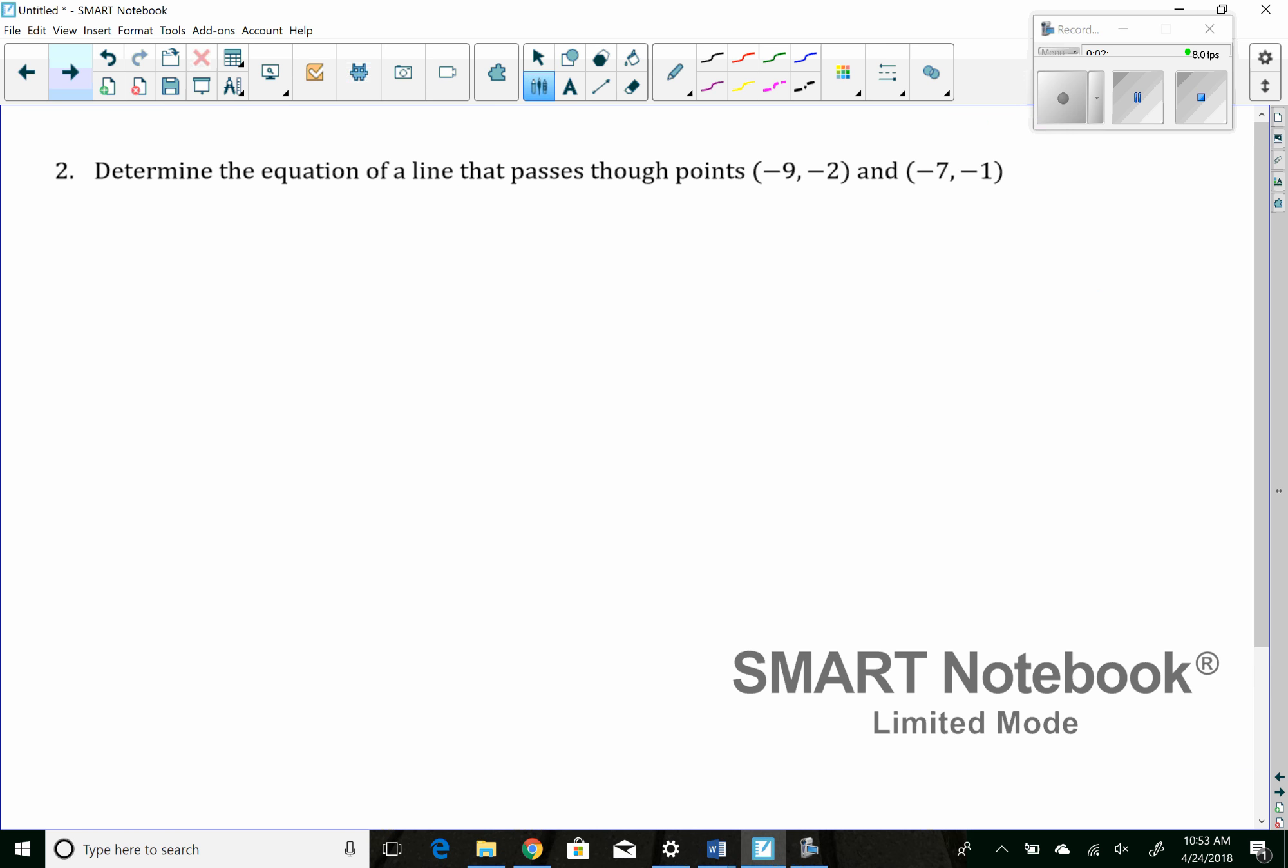Let's take a look at number two. Number two gives us two points and asks us to find the equation, so the first thing we have to do is find the slope. The slope is the change in the y value, so negative one minus negative two all over negative seven minus negative nine. If you notice in the homework questions, I put lots of negatives to make sure that you understand how to use the signs.